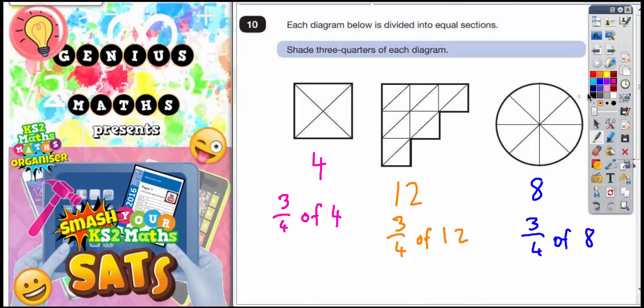Now before we can work out 3 quarters we need to be clear on what 1 quarter is. So 1 quarter of 4. Any time you find a quarter you divide by 4. You're splitting into 4 equal bits. So 4 divided by 4 is 1. So 1 quarter of 4 is 1.